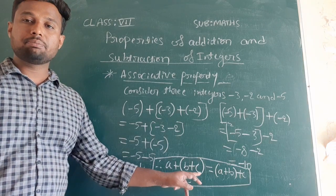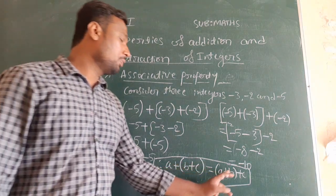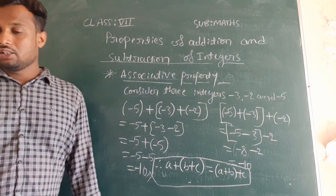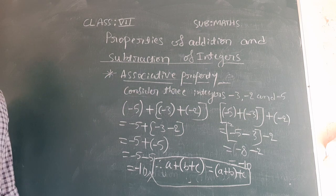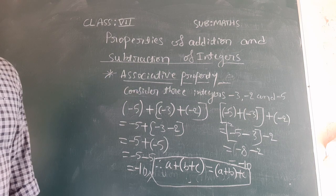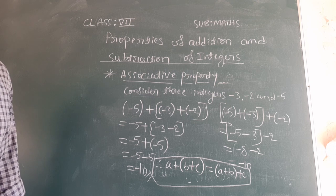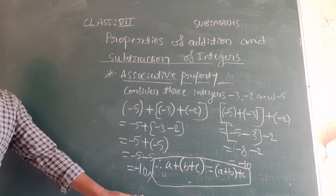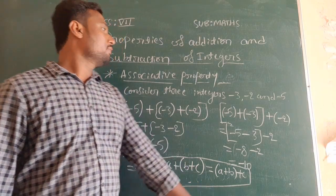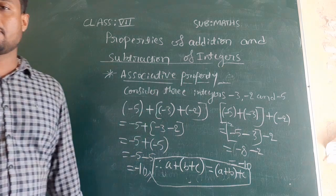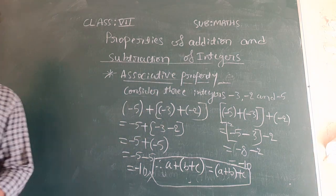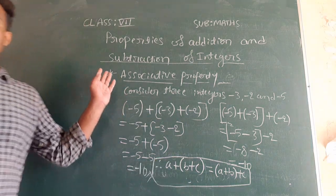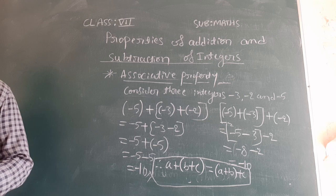a plus (b plus c) equals (a plus b) plus c. Below that you can write: addition is associative for integers. And no need to check for subtraction, because commutative is not applicable to subtraction, so associative is also not applicable to subtraction.